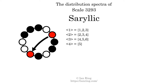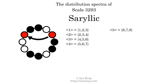The generic interval of 5 scale steps comes in 3 different specific interval sizes: 6 semitones, 7 semitones, and 8 semitones. The spectrum width of this generic interval is 2. The generic interval of 6 scale steps comes in 3 different specific interval sizes: 8 semitones, 9 semitones, and 10 semitones. The spectrum width of this generic interval is 2.